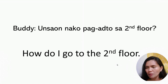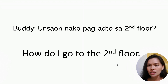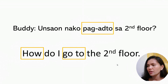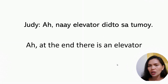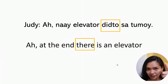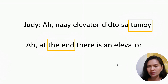Buddy says: 'Unsaon na ko pag-adto sa second floor?' — meaning 'How do I go to the second floor?' Maybe buddy is in a building. Unsaon means 'how,' na ko refers to himself, pag-adto means 'to go,' sa second floor is 'to the second floor.' Judy replies: 'Naa-ay elevator didto sa tumoy.' Naa means 'there is,' didto means 'there,' and tumoy means 'at the end' — there is an elevator at the end.